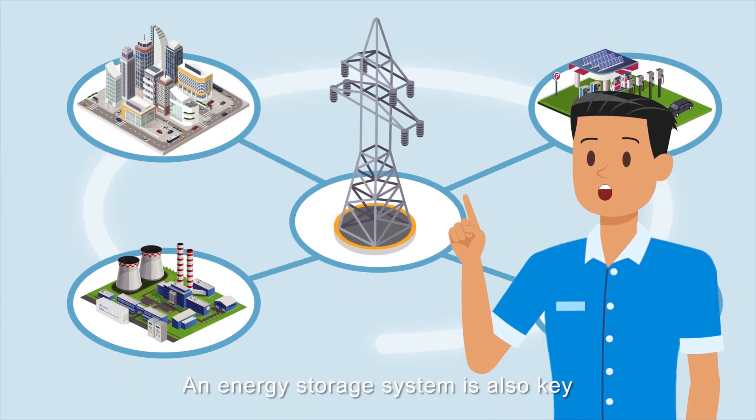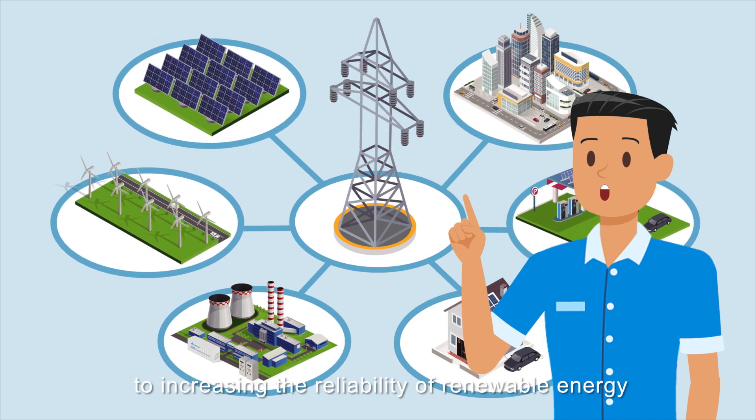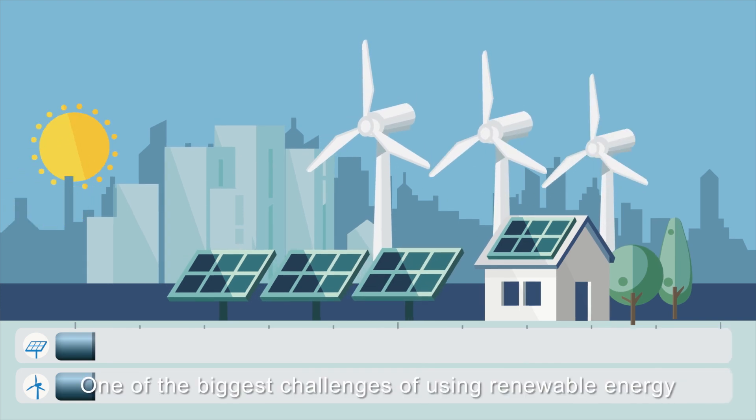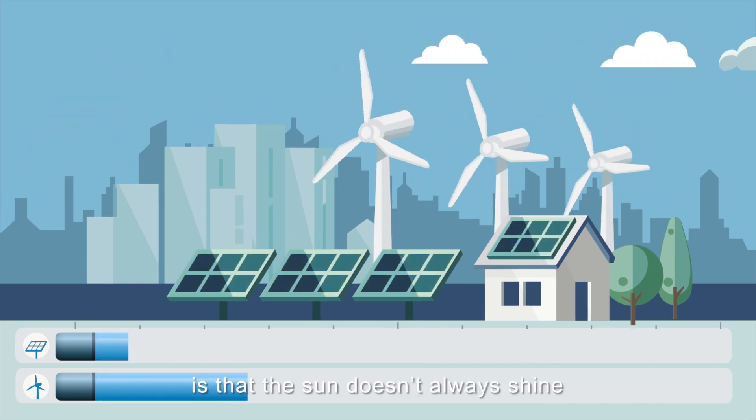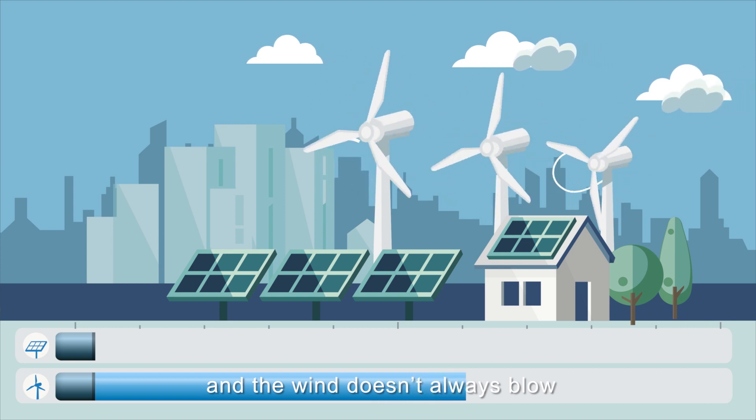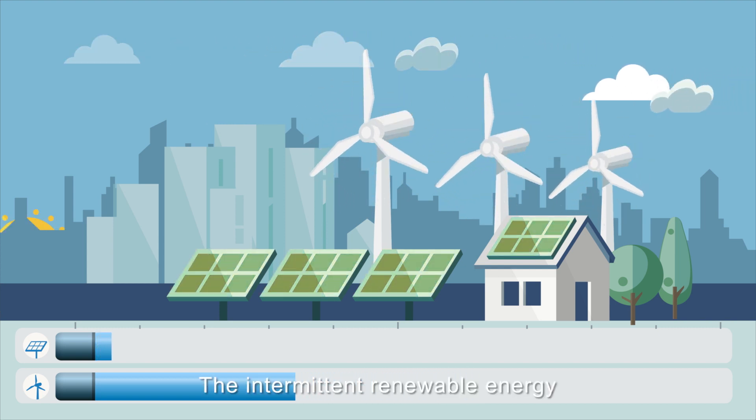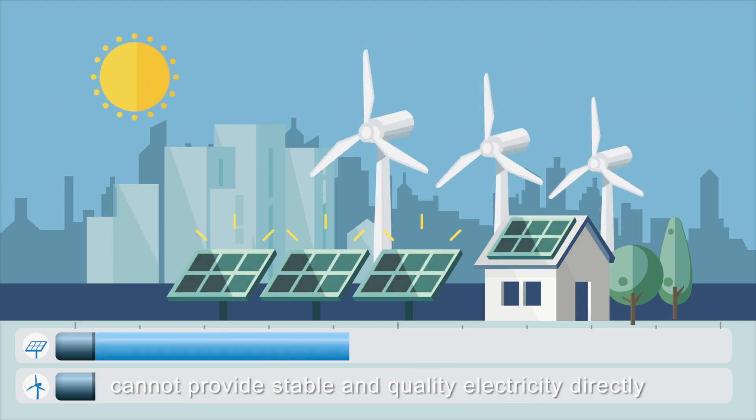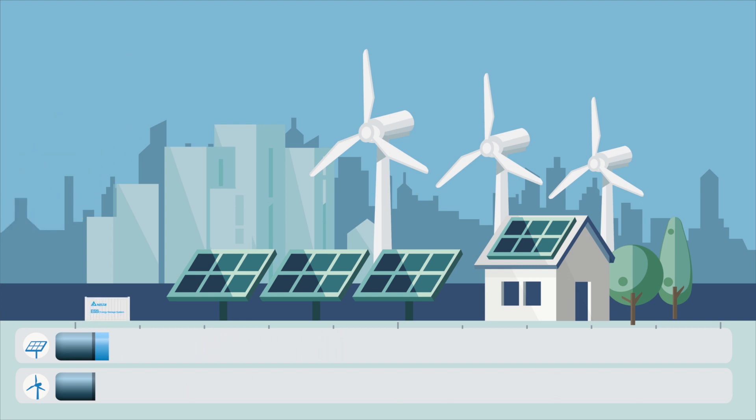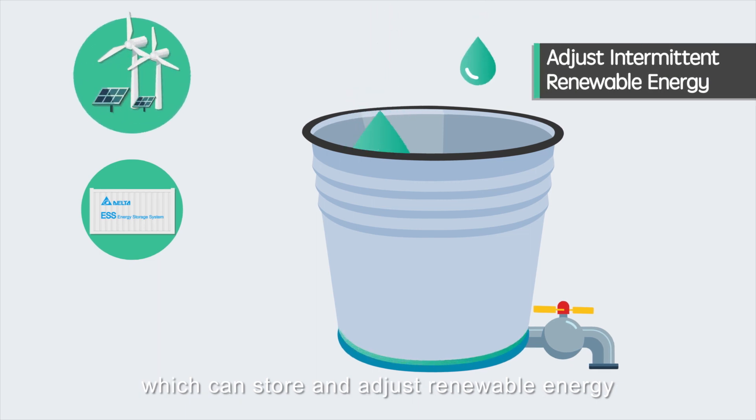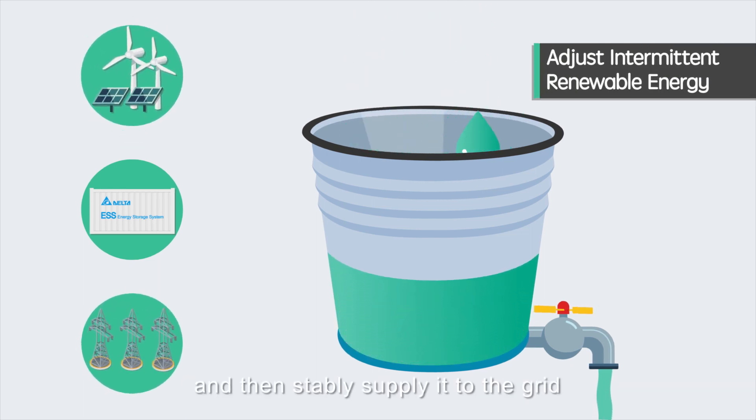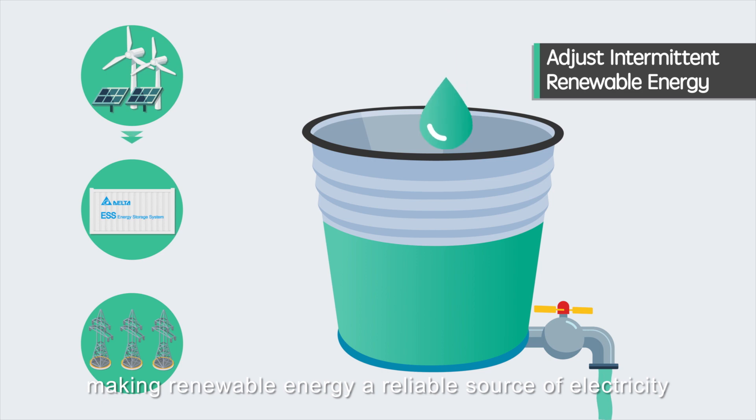An energy storage system is also key to increasing the reliability of renewable energy. One of the biggest challenges of using renewable energy is that the sun doesn't always shine and the wind doesn't always blow. The intermittent renewable energy cannot provide stable and quality electricity directly. The energy storage system is like a large bucket, which can store and adjust renewable energy and then stably supply it to the grid, making renewable energy a reliable source of electricity.